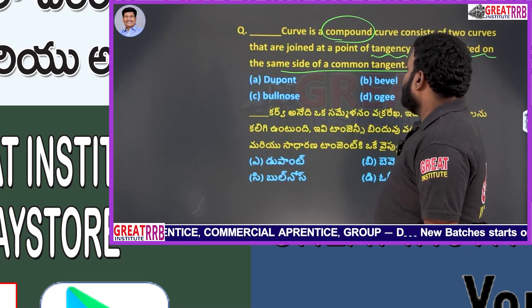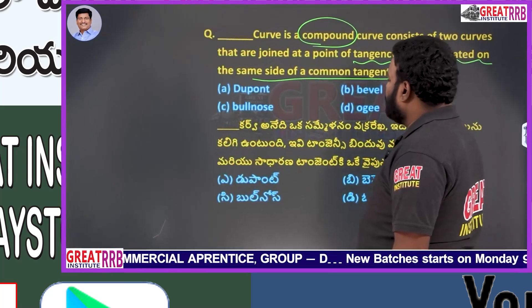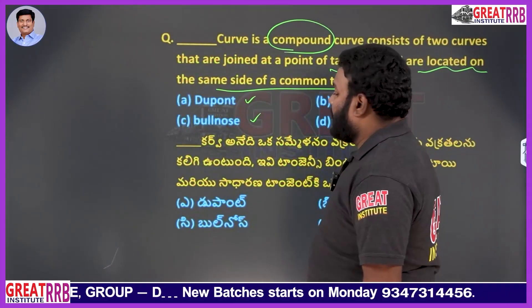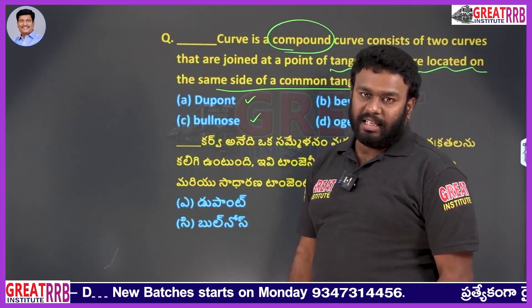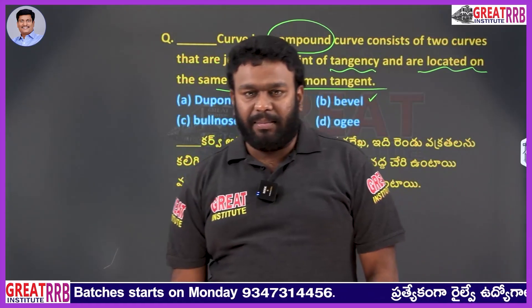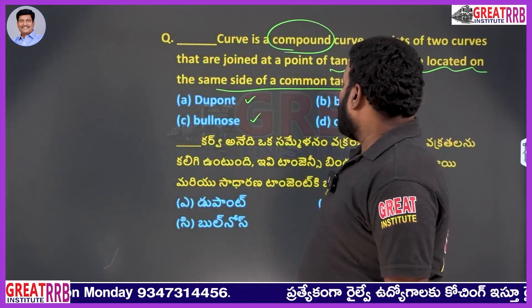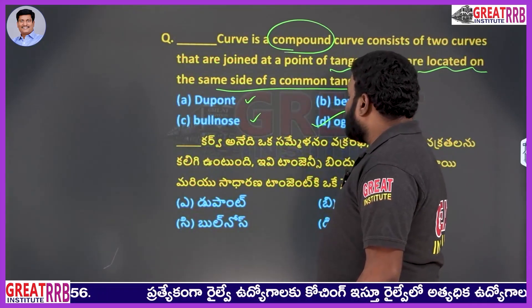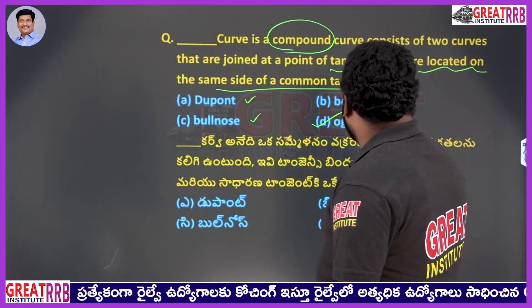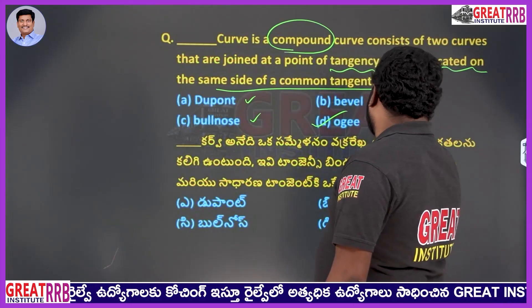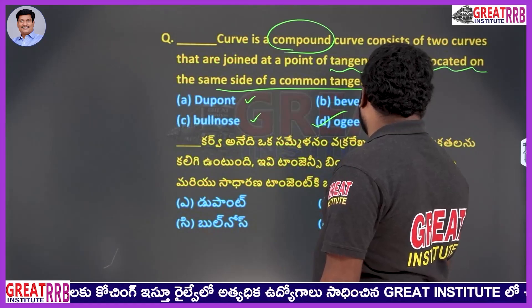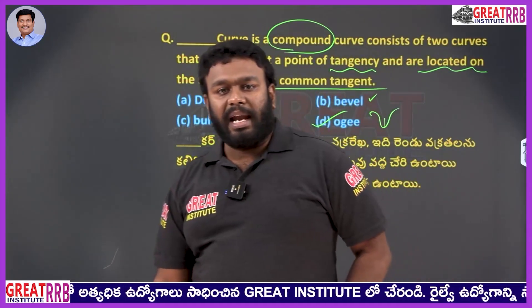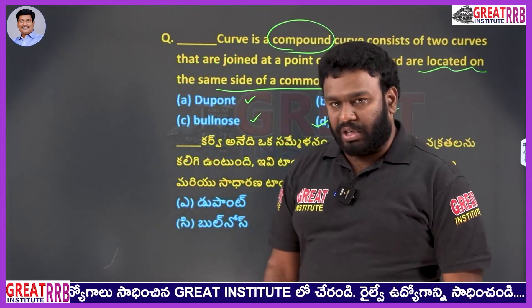Dew point, bevel curves, and bullnose curves do not have any compoundness. Ogee curves are curves which consist of a combination of two curves. So option D, ogee curves, will be the right answer for the given question.